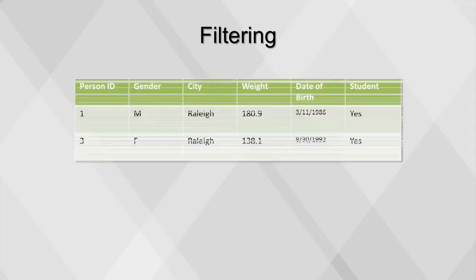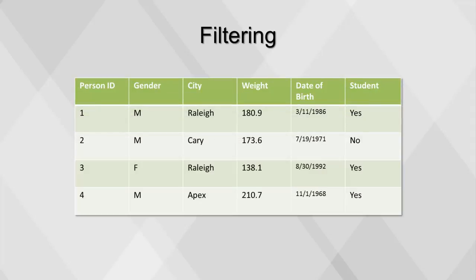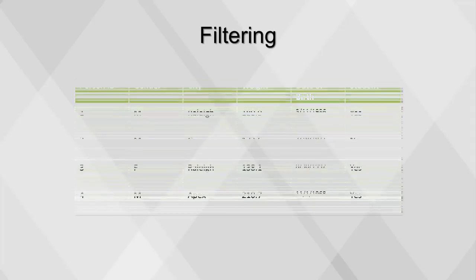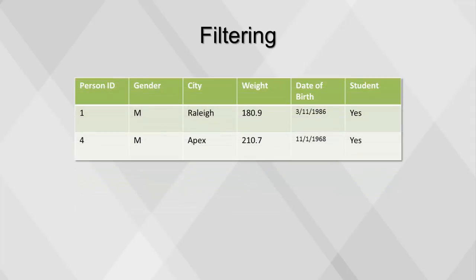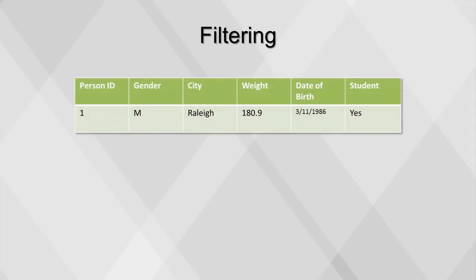This table is filtered to show only records of people who live in Raleigh. Here's our original data set again. This table is filtered to show only records of people who weigh more than 180 pounds. Filters of different variables can be applied together. Combining the above examples, we can filter the original table for people who live in Raleigh and weigh more than 180, which results in only one observation.